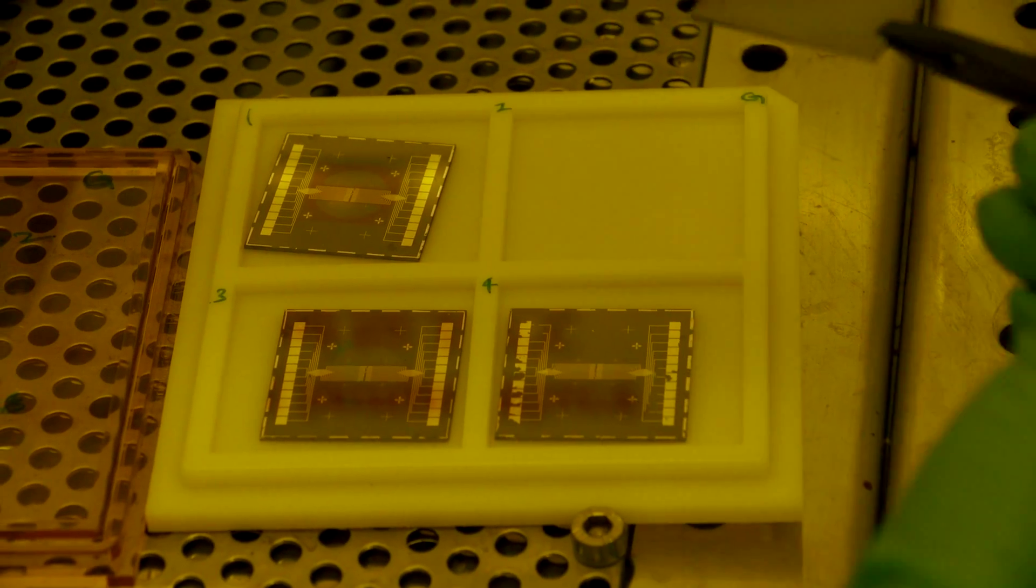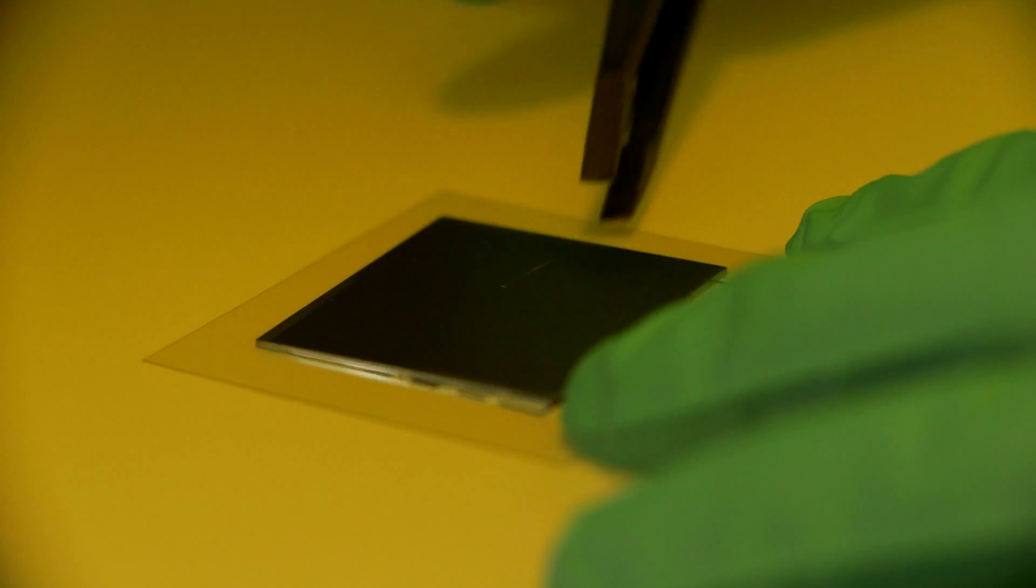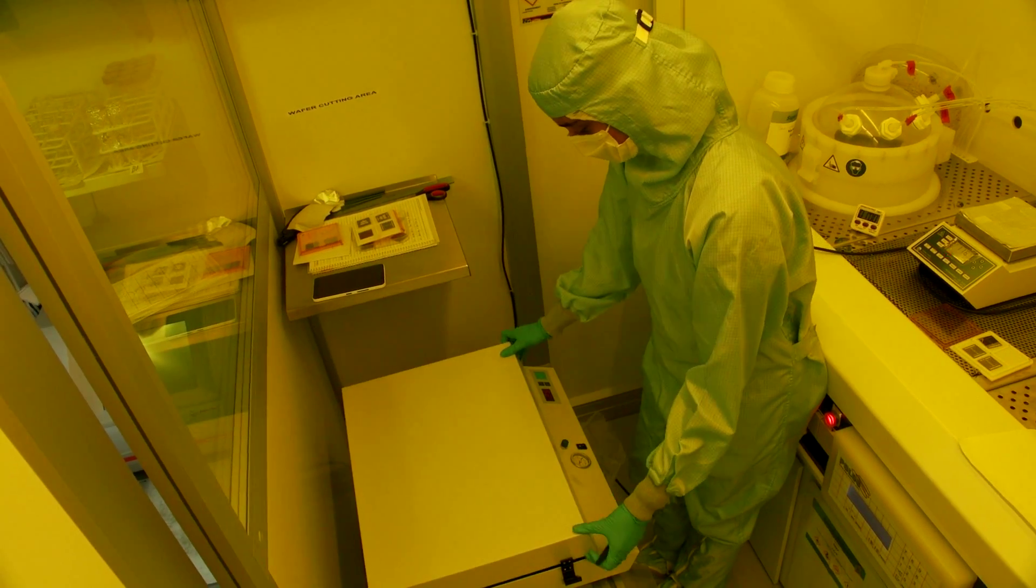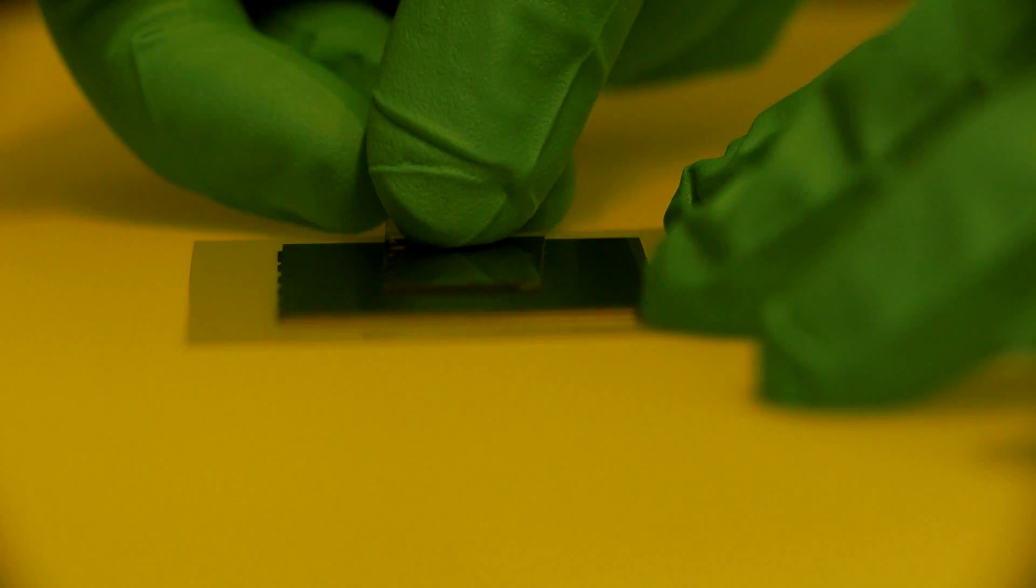So this prototype is made of different parts. The first one is a chip, which is a piece of silicon and on top of this piece of silicon, we start to put the different components, layer by layer.